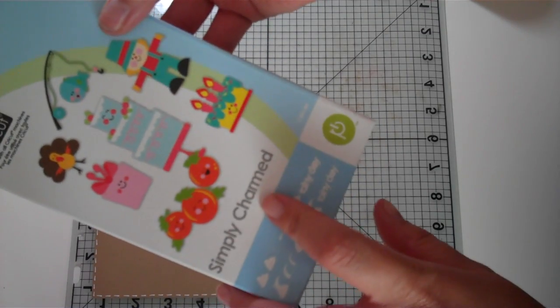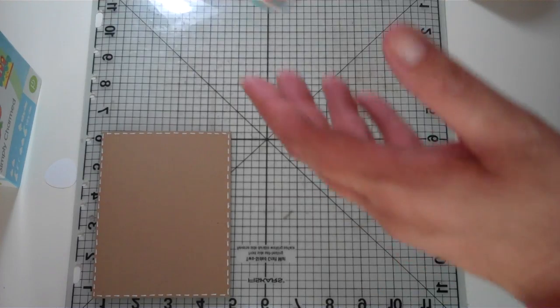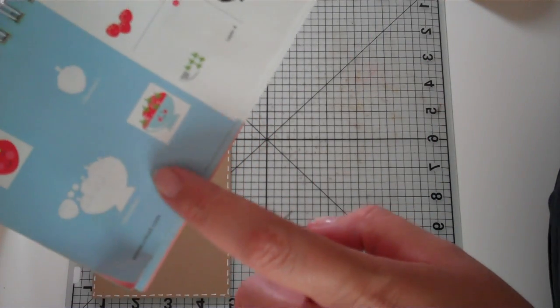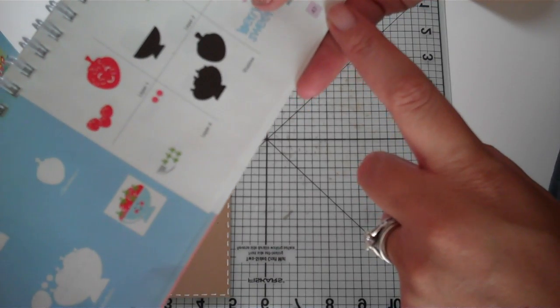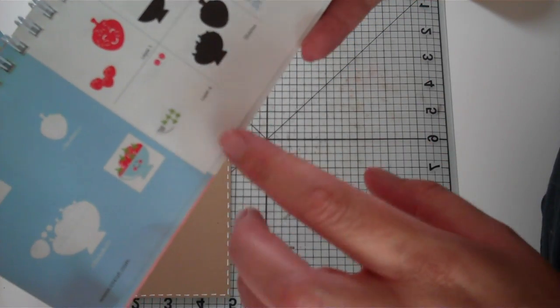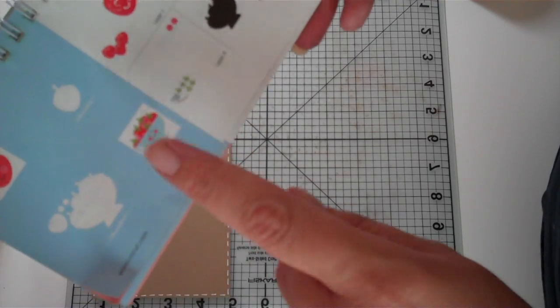We're going to be making a card using the Simply Charmed cartridge and we're going to be using the strawberries, the bowl of strawberries here on page 47. The only thing I did is I decided I wanted to use patterned paper for the bowl so I didn't cut the little face out.